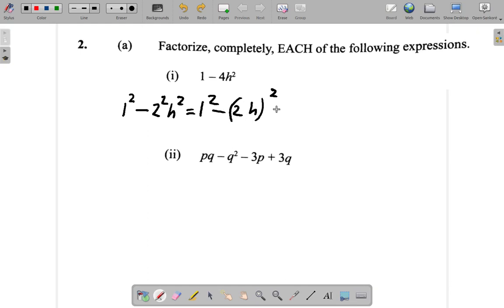And the shortcut way of factorizing the difference of two squares is that you have two brackets. In the left hand corner of each bracket you have whatever it is that you squared. That is on the left. You square 1 so it's 1 on the left. In the right you put whatever you squared 2h.